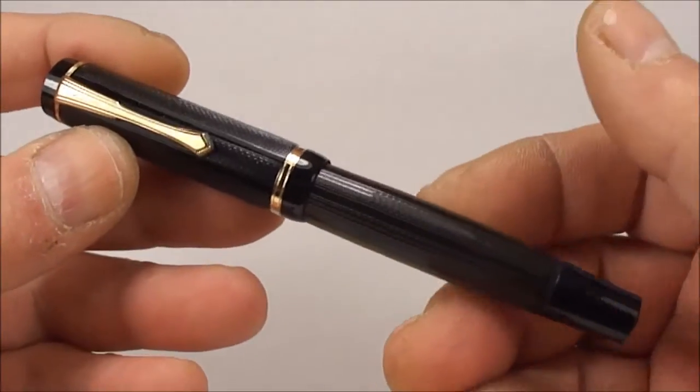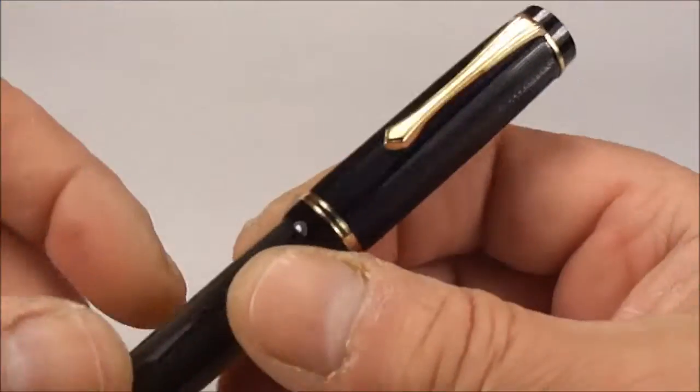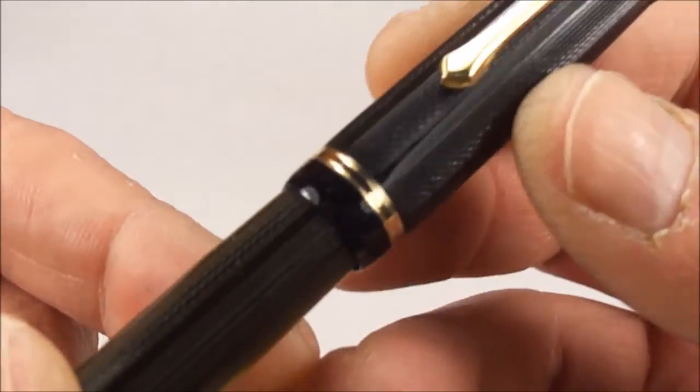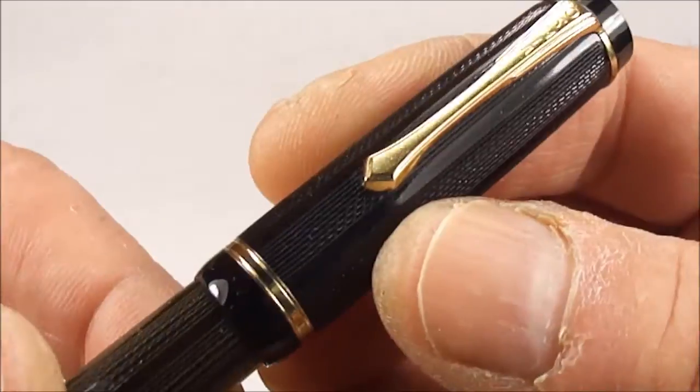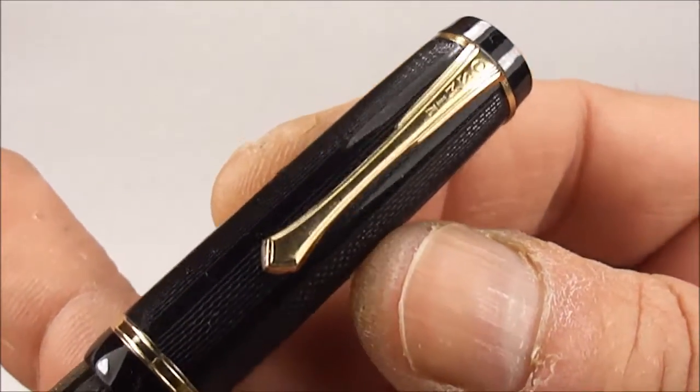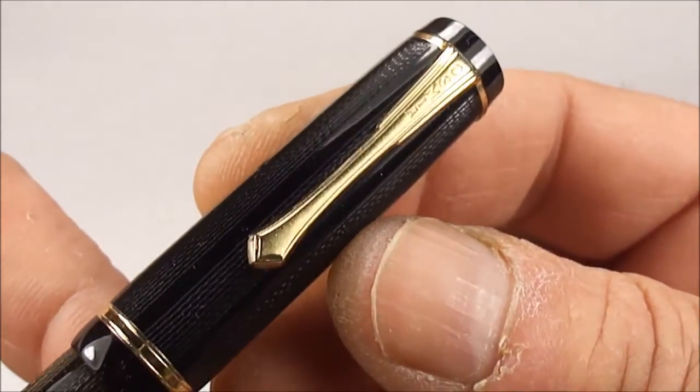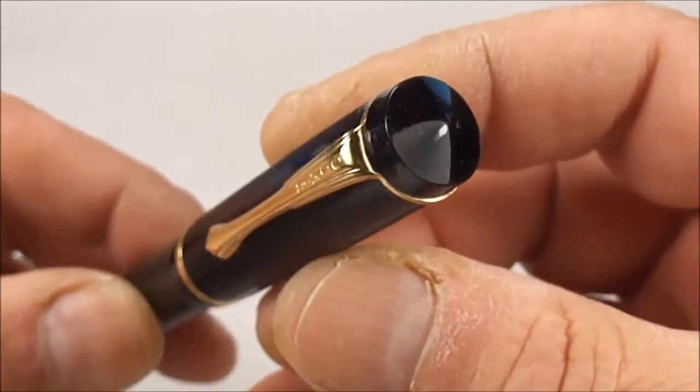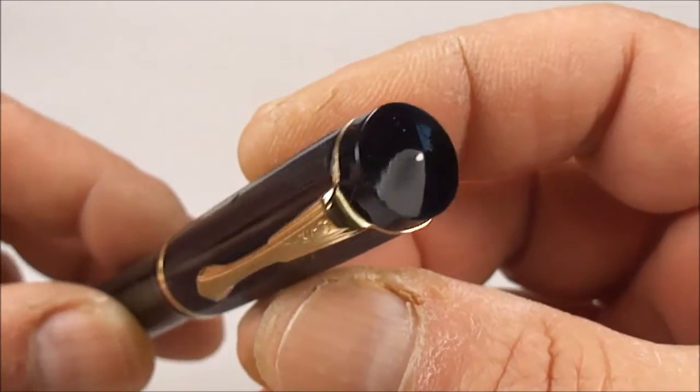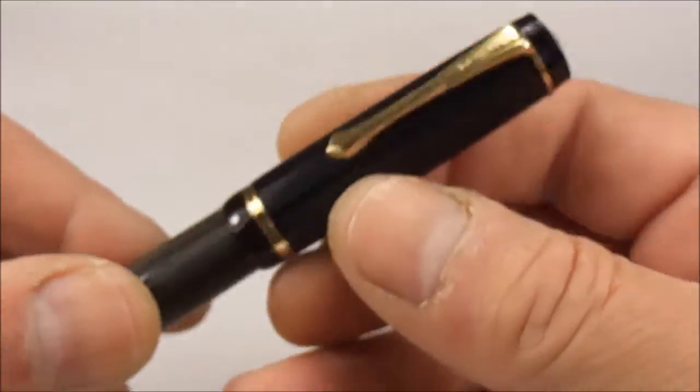As we'll show you this one is a piston filler. It comes with gold filled trim, you can see it's got this quite a standard cap band to the bottom there. It's got this very nice, I think a very attractive clip to the top there with the word Osmia to the very top. And you can see it's got this sort of black cap stud to the top there.